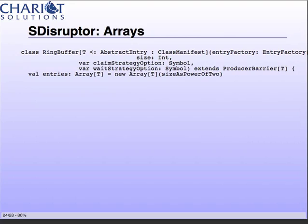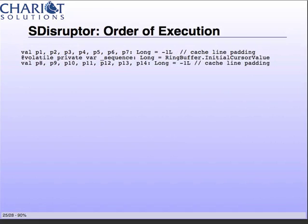With arrays, you'll notice a type bound where I'm saying I have a generic type T that is covariant to abstract entry — anything that creates a ring buffer entry has to be an abstract entry child. But I'm also passing in a class manifest. Scala has a way of reifying types based on type erasure — you can't easily create a generically-typed array in Java. Because of this class manifest declaration in my class, all I have to do is say 'new array T' with the size, and the class manifest passes in the specific type information used in the creation of that array.